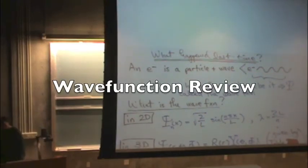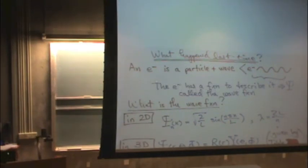What happened last class? You need to know that an electron is both a particle and a wave. So if you imagine the wave part of the particle, that follows some sort of function that's sinusoidal, meaning it can be followed by a sine or a cosine function.